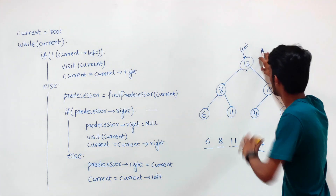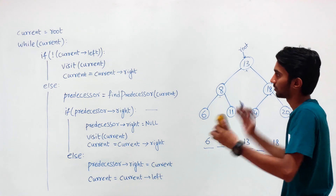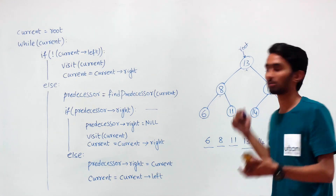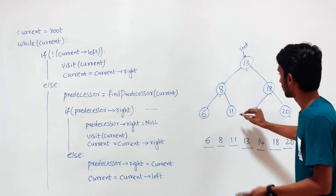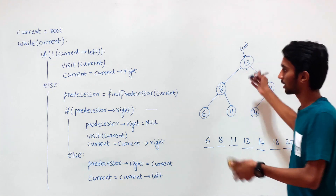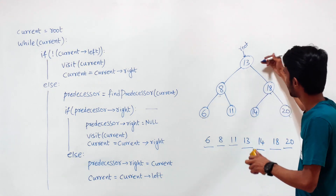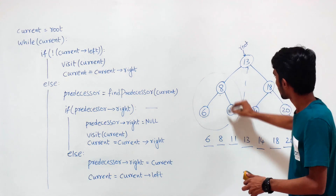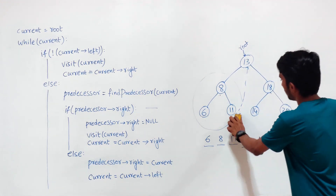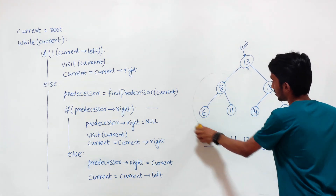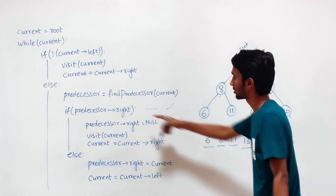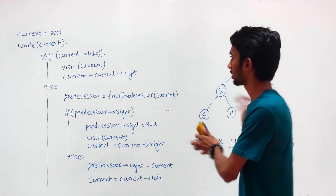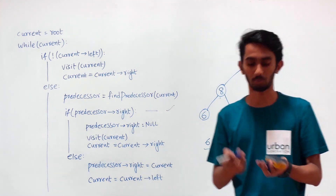To summarize: we check whether the left subtree exists at each node. If it does, before giving control to the left subtree, we find the predecessor and form a link from the predecessor to the current node. When we return to the root node a second time and the predecessor's right exists, we remove the link to revert the tree back to its original state, visit the node, and move to the right subtree. Consider implementing this mechanism for pre-order or post-order traversals as well.